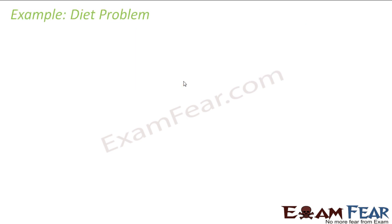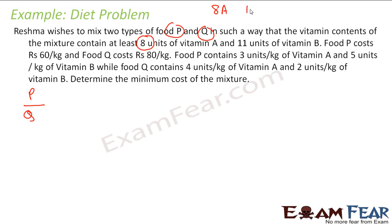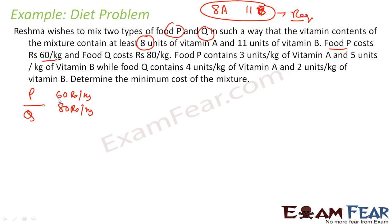Let's take one example of a diet problem. Reshma wishes to mix two types of food — food P and food Q — such that the vitamin content of the mixture contains at least 8 units of vitamin A and 11 units of vitamin B. Food P costs 60 rupees per kg and food Q costs 80 rupees per kg.